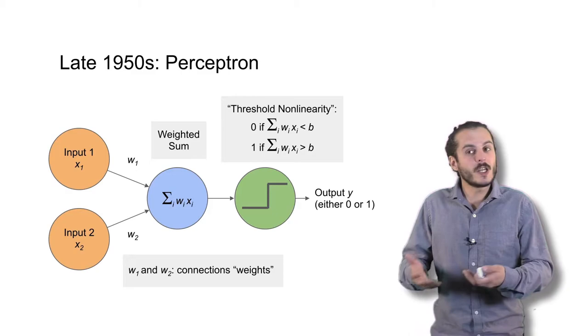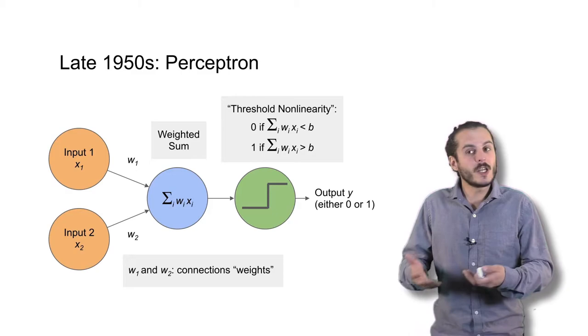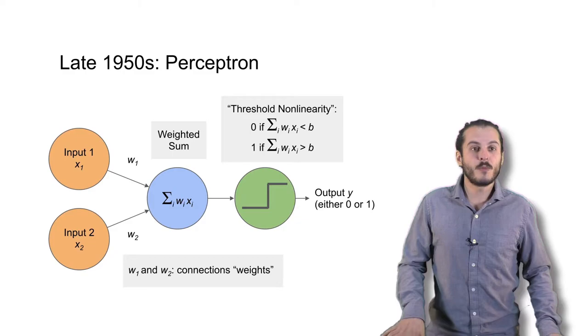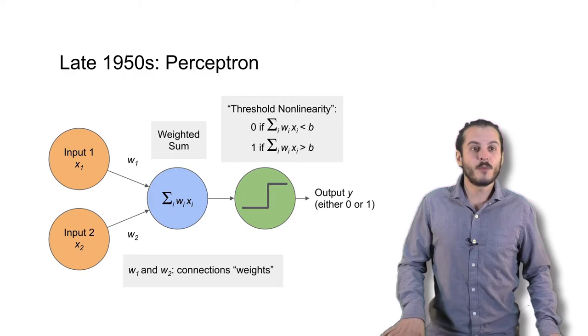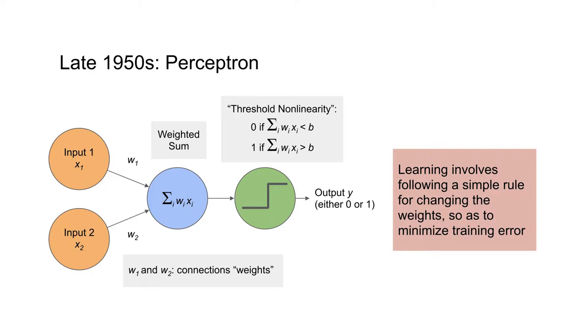And after that, the weighted sum is passed through something called a nonlinearity. A nonlinearity is just a nonlinear function. And what the perceptron uses is called a threshold nonlinearity. And it basically says, if the weighted sum is below some threshold, output a zero. And if it's above some threshold, output a one. It's like a cutoff.